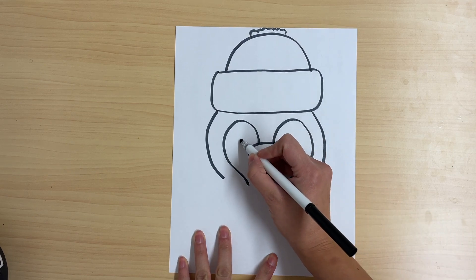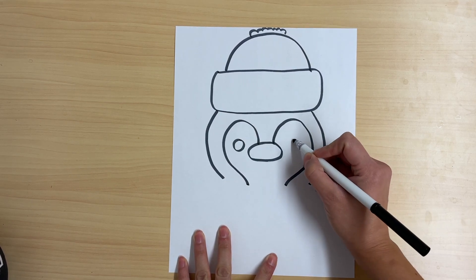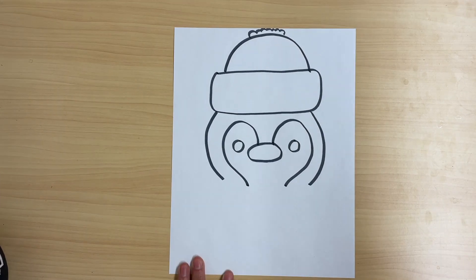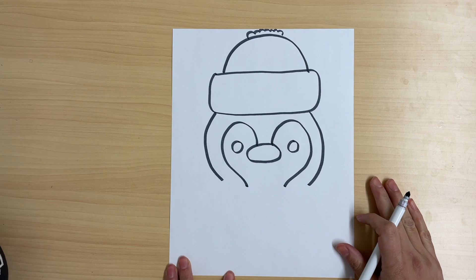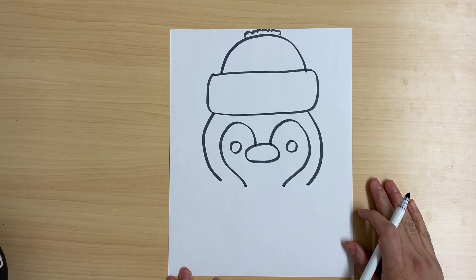Then I'm going to draw two circles for the eyes. Now it's time to decide what kind of emotion your penguin is feeling. What is their facial expression going to be looking like?